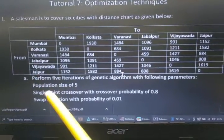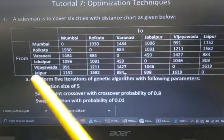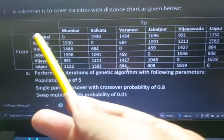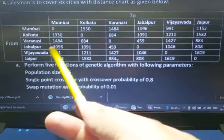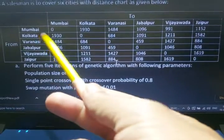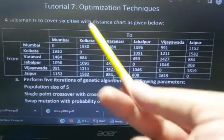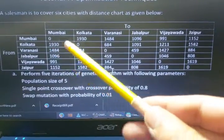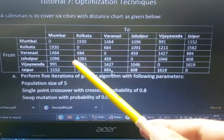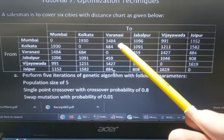For example, if he starts from Mumbai, he goes to Kolkata, then Varanasi, then Jabalpur, then Vijayawada, then Jaipur, then back to Mumbai. This is one Hamiltonian path that needs to be found, and the loop has to be done with the minimum distance.